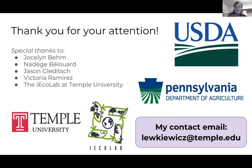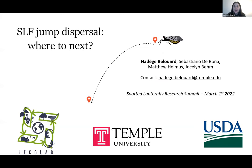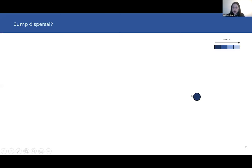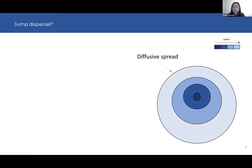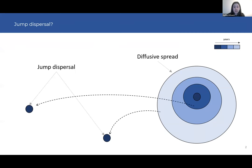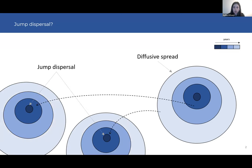Thank you Stephanie. I am Nadege Bilois, a postdoc at the iEcolab at Temple University. After Stephanie talked about where spotted lanternfly populations could persist, I'm going to talk about where they can spread through jump dispersal. When a species is introduced in a new area, it will first spread in a continuous way called diffusive spread. But at the same time, populations can establish far away from the core invasion in a process called jump dispersal due to human-assisted dispersal. These populations can also spread on their own through diffusive spread, making this a real concern even for areas far away from the initial invasion.